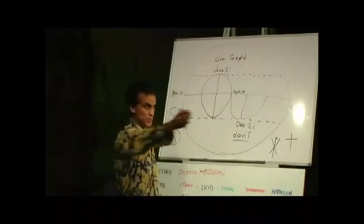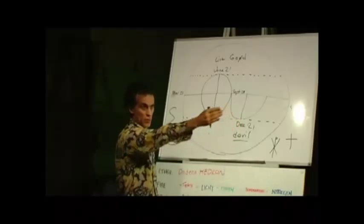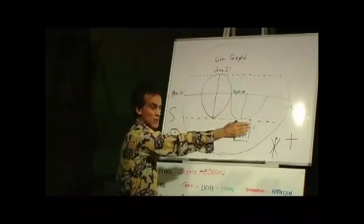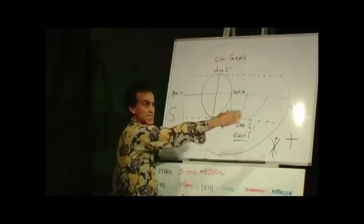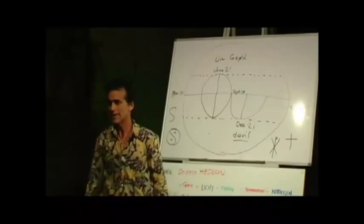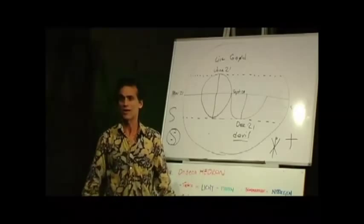Every year the sun goes from summer to winter. Summer, autumn, winter, spring on the horizon. It's 47 degrees on the horizon. And it casts a shadow which makes an X on the ground. That X is chi-ro. It's the Christ.